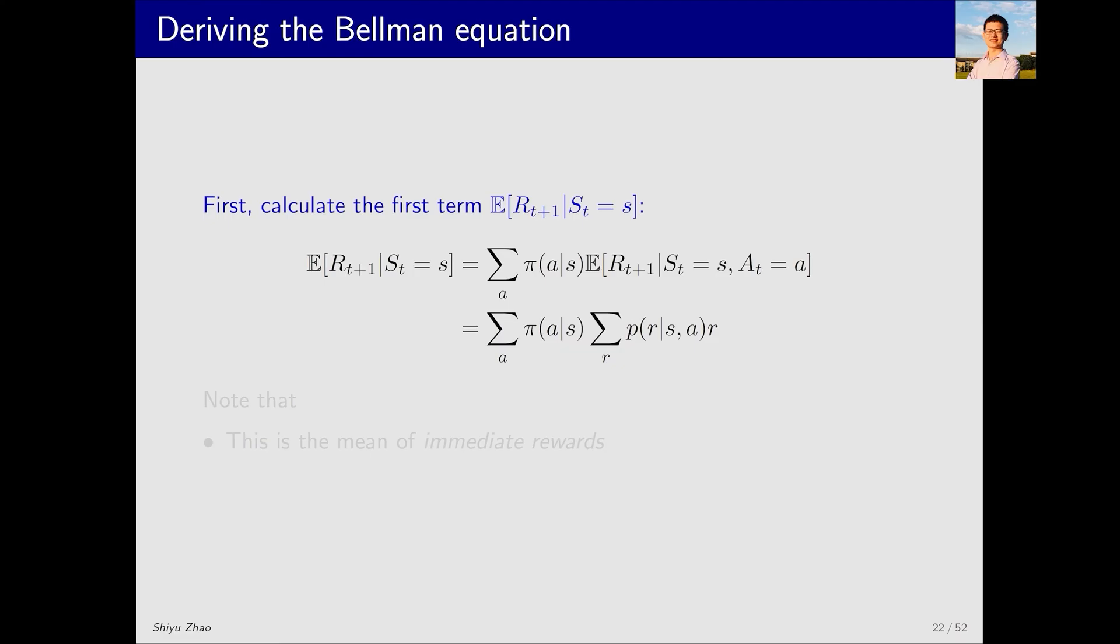Let's examine the first expectation. At the current moment, I am in state s and the immediate reward is rt plus one. What is its mean? The mean is represented by this equation. Initially, in state s, I have several actions I can take. If I take action a, its probability is determined by pi. When I take action a, the value I get is given here. This represents the probability of receiving r reward upon taking action a from s, and the value of r itself is this. According to the definition of expectation, this leads to the first term. The interpretation of this term is quite simple: the expectation of the immediate rewards that I can obtain.